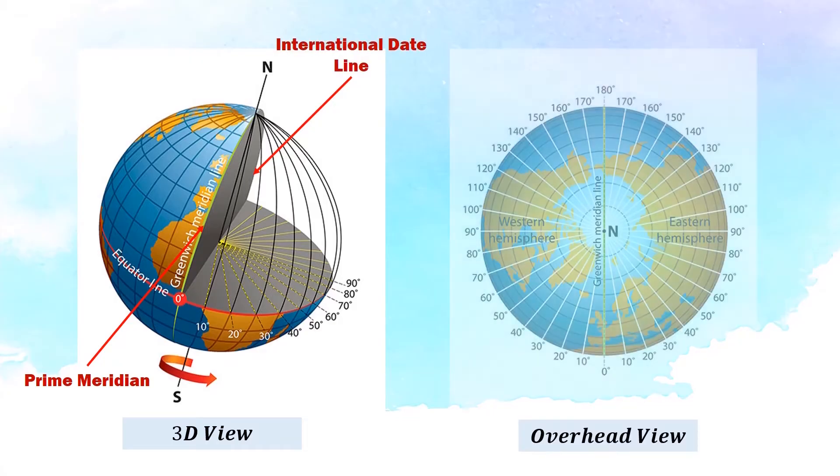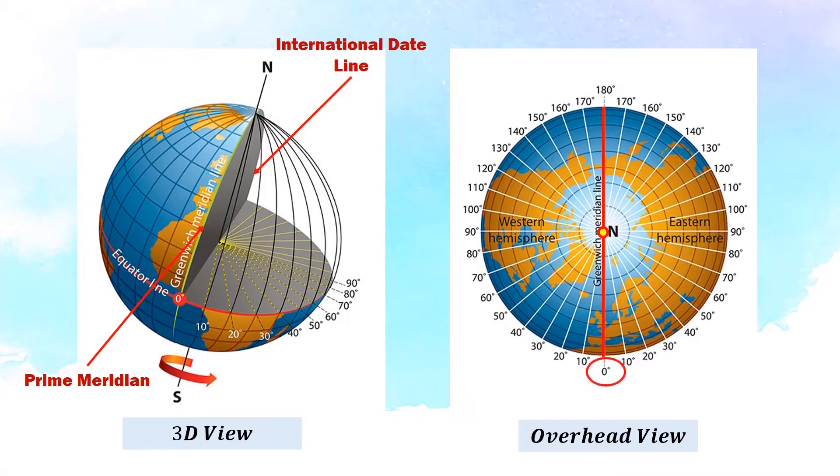On an overhead view of the globe, the 0 degrees is the location of the prime meridian, while the 180 degrees at the other side is where you can find the international dateline.